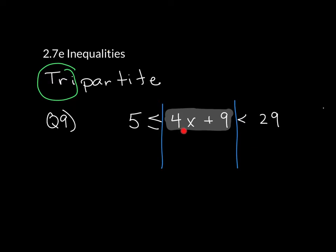In the inside, it's 4x plus 9. So I start the same way. I want to go ahead and subtract 9, but not just from both sides of the equation. I want to subtract 9 from all three parts. When I do that, I am left with 5 minus 9, which gives us negative 4, is less than or equal to 4x, which is less than 20. 29 minus 9.